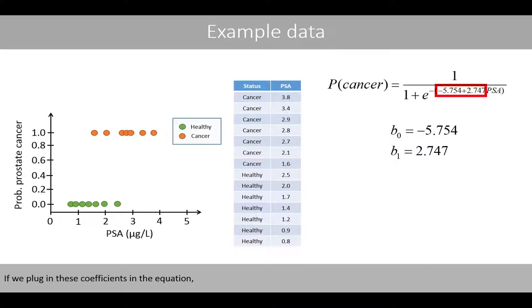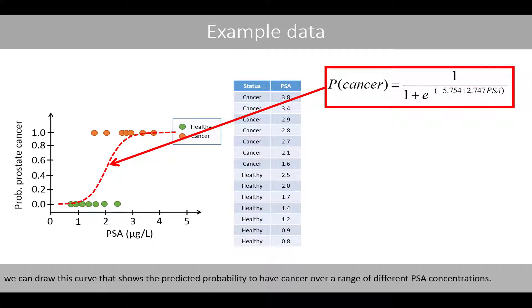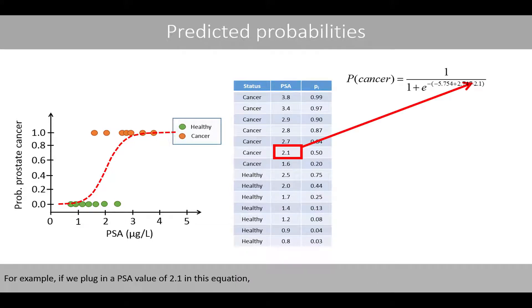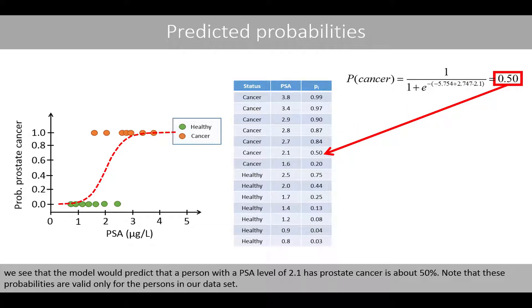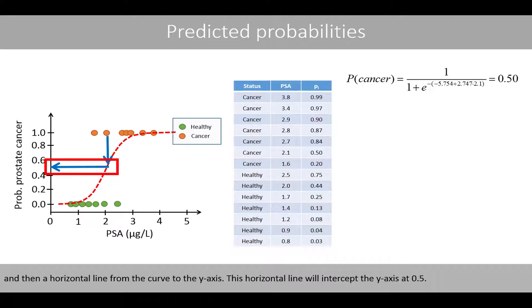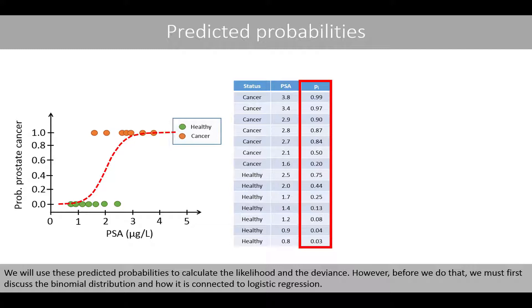If we plug in these coefficients in the equation, we can draw a curve showing the predicted probability of having cancer over a range of PSA concentrations. Based on this function, we can calculate the predicted probabilities for each person in the dataset. For example, plugging in a PSA value of 2.1, the model predicts about 50% probability of prostate cancer. We obtain the same probability by drawing a vertical line from the data point to the curve, then a horizontal line to the y-axis, which intercepts at 0.5. We will use these predicted probabilities to calculate the likelihood and the deviance.